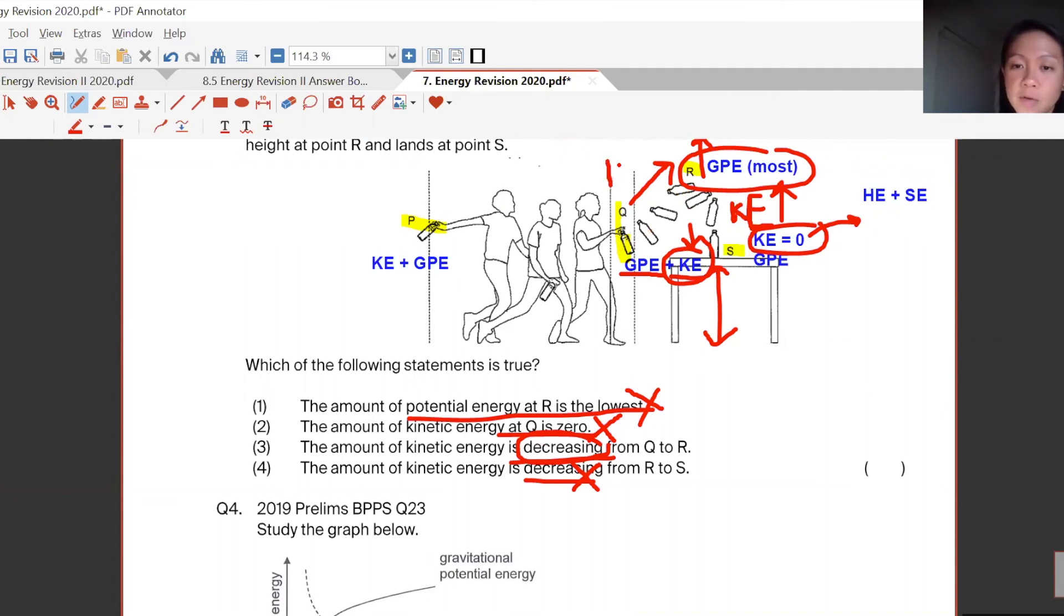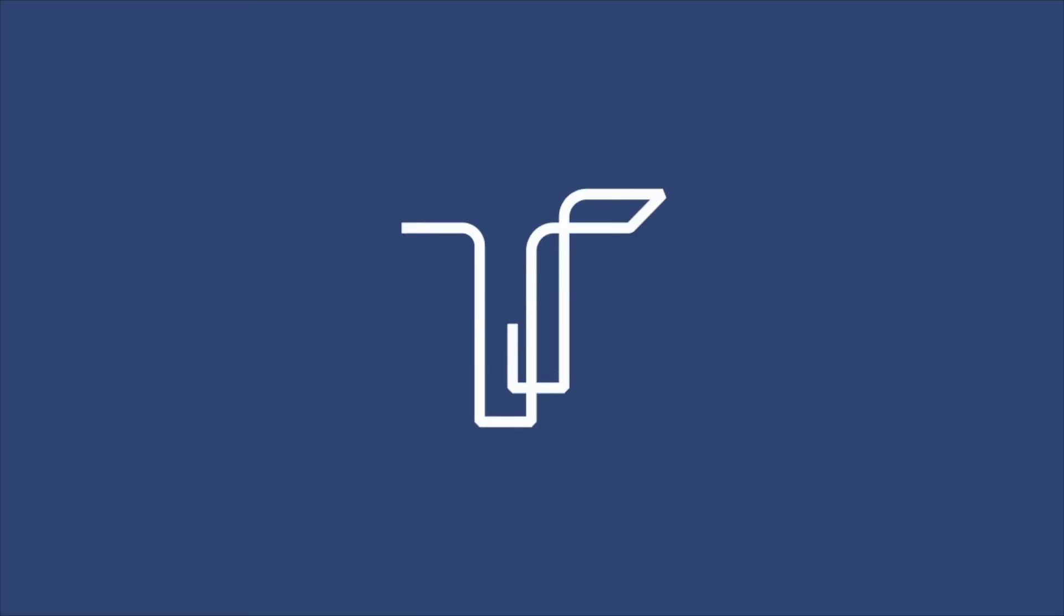KE here is decreasing. Then after that, KE on the other side is increasing. Just remember, they're always opposite in relationship. GPE and KE are always opposite. More GPE, less KE. More KE, less GPE. Because they always convert between each other. Energy cannot be destroyed.